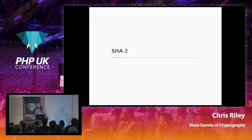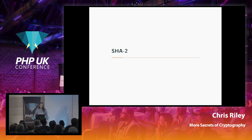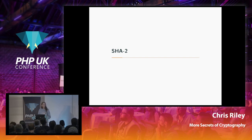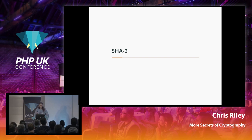Instead of MD5, we use SHA-2 — the most common hash algorithm family today. The SHA-2 family consists of algorithms that are identical at their core but vary in block size, starting constants, and output length. SHA-256 produces a 256-bit output; SHA-512 produces a 512-bit output. There are also configurations like SHA-256/512, which uses the first 256 bits of a SHA-512 computation. The right variant depends on your use case.